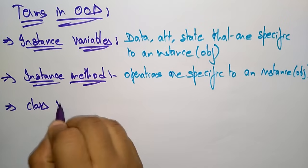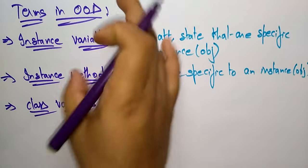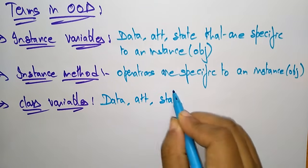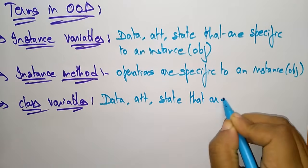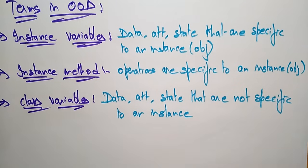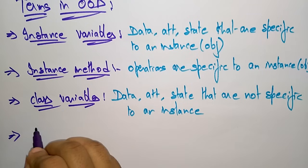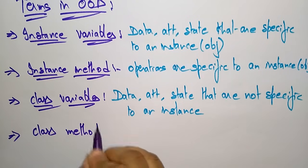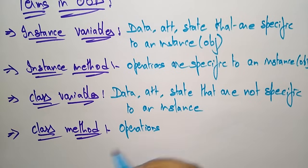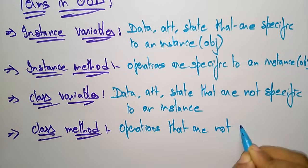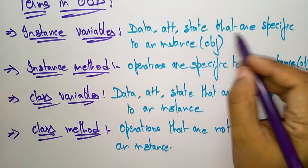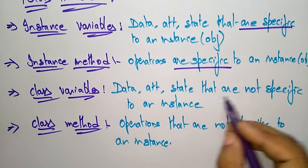The next term is class variables. Class variables consist of data attributes and states that are not specific to an instance — note that, not specific to an instance. Similarly, class methods perform operations that are not specific to an instance. So remember: instance variables and methods are specific to an instance, while class variables and methods are not specific to an instance.